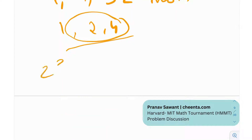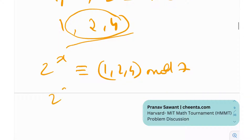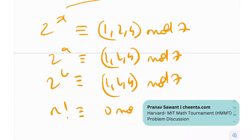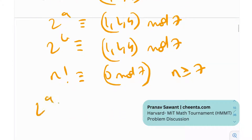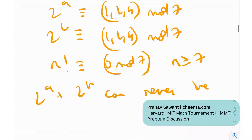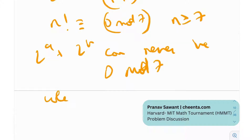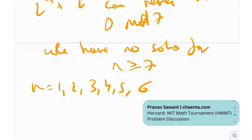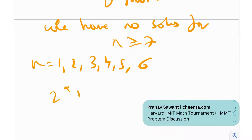The key takeaway: 2^x ≡ 1, 2, or 4 (mod 7). So 2^a and 2^b are each in {1, 2, 4} mod 7. On the right-hand side, n! ≡ 0 (mod 7) for n ≥ 7. But 2^a + 2^b can never be 0 mod 7 — the possible sums from {1,2,4} + {1,2,4} never yield 0 mod 7. Therefore, there are no solutions for n ≥ 7.